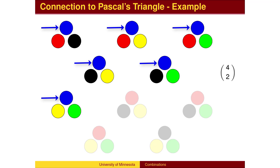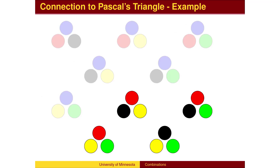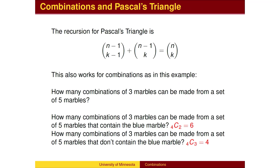Pick the blue marble, and then pick 2 of the remaining 4. The other piece comes from those combinations that don't include blue, in which case we need to choose 3 of the remaining 4, which is 4 choose 3. Altogether, we get 5 choose 3 by adding 4 choose 2 and 4 choose 3. 4 choose 2 is the combinations that include blue, and 4 choose 3 is the combinations that don't include blue.